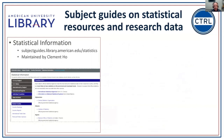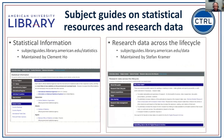We have subject guides on listings of external resources related to statistics and data. There's a statistical information guide, currently in transition after a recent staff retirement. I also have one on research data across the life cycle, which is mostly about how AU researchers can share and manage their own research data, but also covers how to find existing external research data.